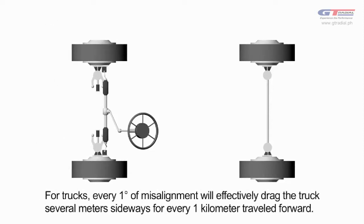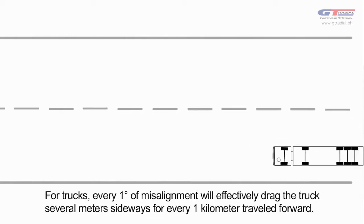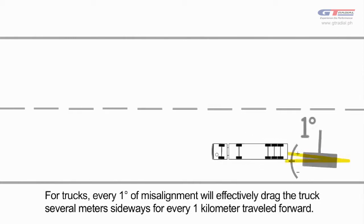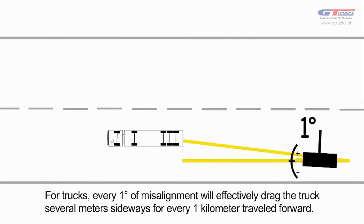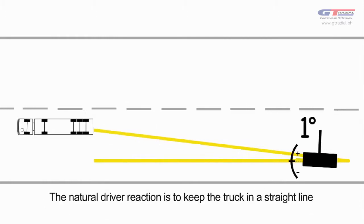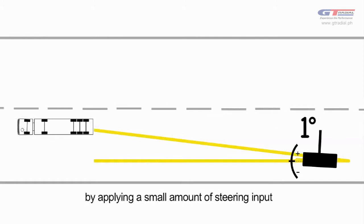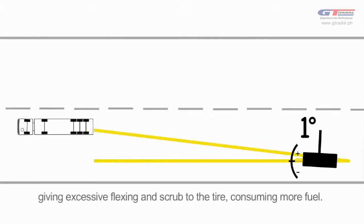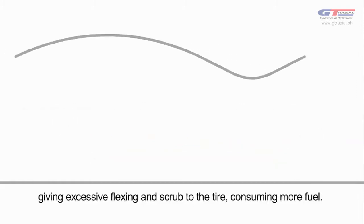For trucks, every one degree of misalignment will effectively drag the truck several meters sideways for every one kilometer traveled forward. The natural driver reaction is to keep the truck in a straight line by applying a small amount of steering input. This gives excessive flexing and scrub to the tire, consuming even more fuel.